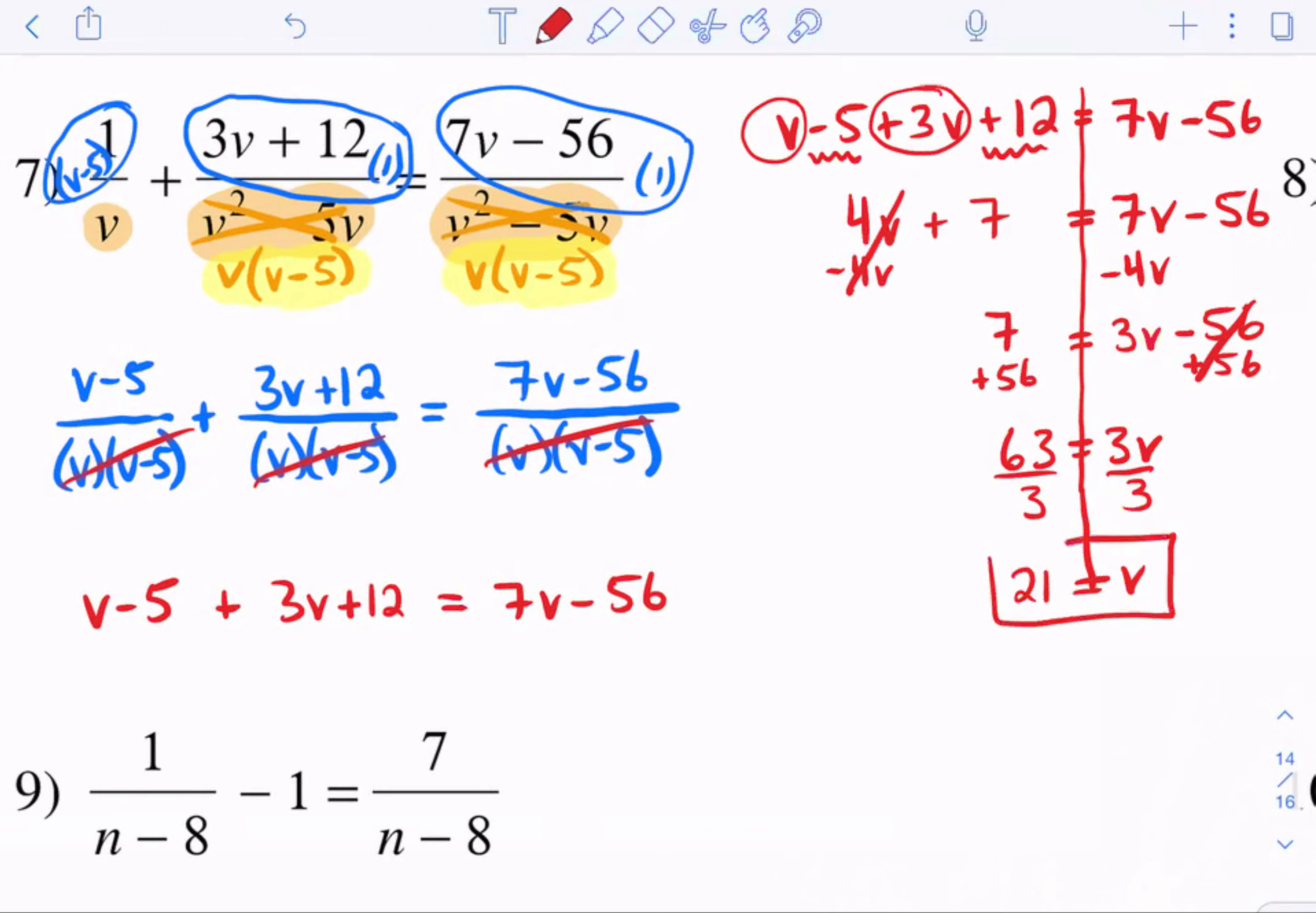Now, remember, you always have to check. If I put the v back into these denominators, will I get a 0? So just by putting a 21 here, you know that one's good. Over here, you have to do 21 squared minus 5 times 21. So let's check. 21 squared minus 5 times 21 gives you 336. So after checking it, this is good. It won't give us a 0. So that is our final answer, v equals 21.